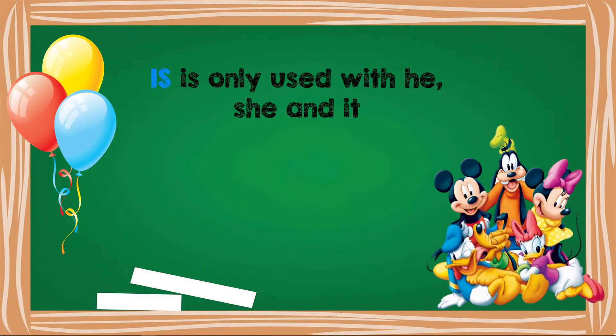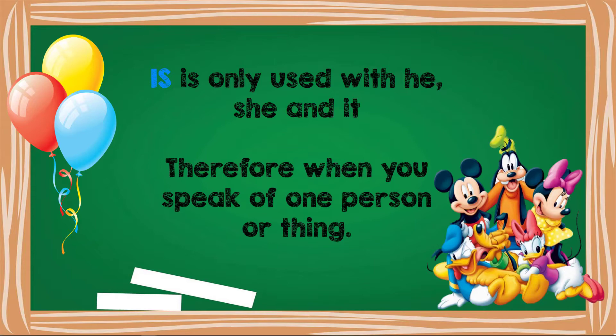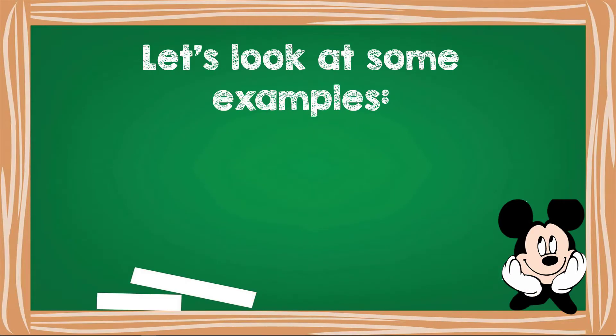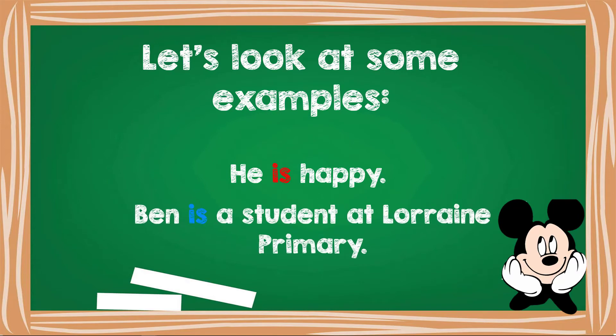Is is only used with he, she and it. Therefore, when you speak of one person or thing. Let's look at some examples. He is happy. Ben is a student at Lorraine Primary.